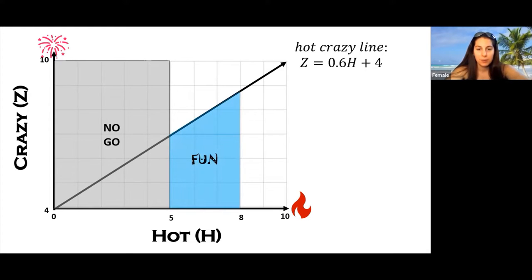Now the fun zone is a transitory zone. This is the area under the hot crazy line. So to find that we integrate the line equation and since this zone extends from 5 to 8 hot, those are the bounds of integration. Generally this is where younger women are and as they age they transition out of this zone to a more permanent location.